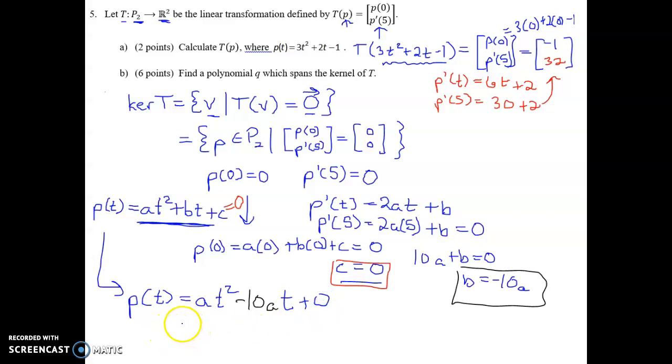So any polynomial in the kernel has the form AT squared minus 10AT. I could factor A out of that, so it's A times the quantity T squared minus 10T. So every polynomial in the kernel has this form.